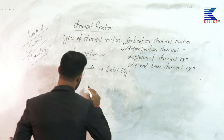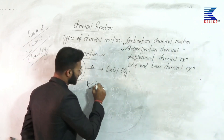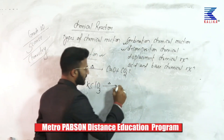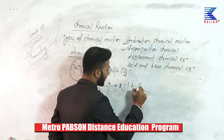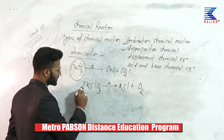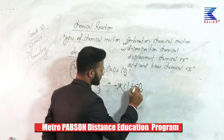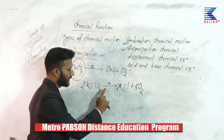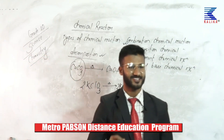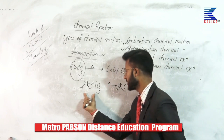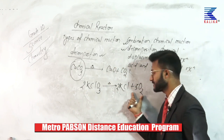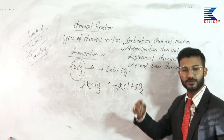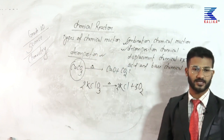Another example: the same thing happens when potassium chlorate is heated. It breaks down into potassium chloride and oxygen. To balance it, we must add coefficients. This is now a balanced decomposition chemical reaction. A single type of reactant molecule is broken down into two different types of product molecules, so it is a decomposition chemical reaction.